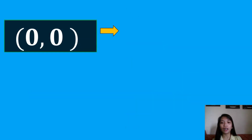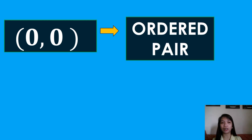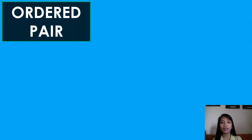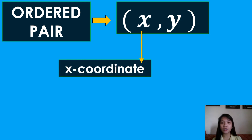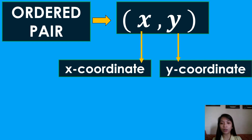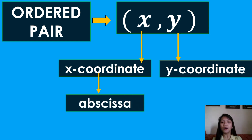We have said that the origin is at the point (0, 0). So what do we call the point (0, 0)? It is called an ordered pair. Let's take this ordered pair (x, y). X is called the x-coordinate, while the second number, y, is called the y-coordinate. The x-coordinate is also called the abscissa, while the y-coordinate is called the ordinate.